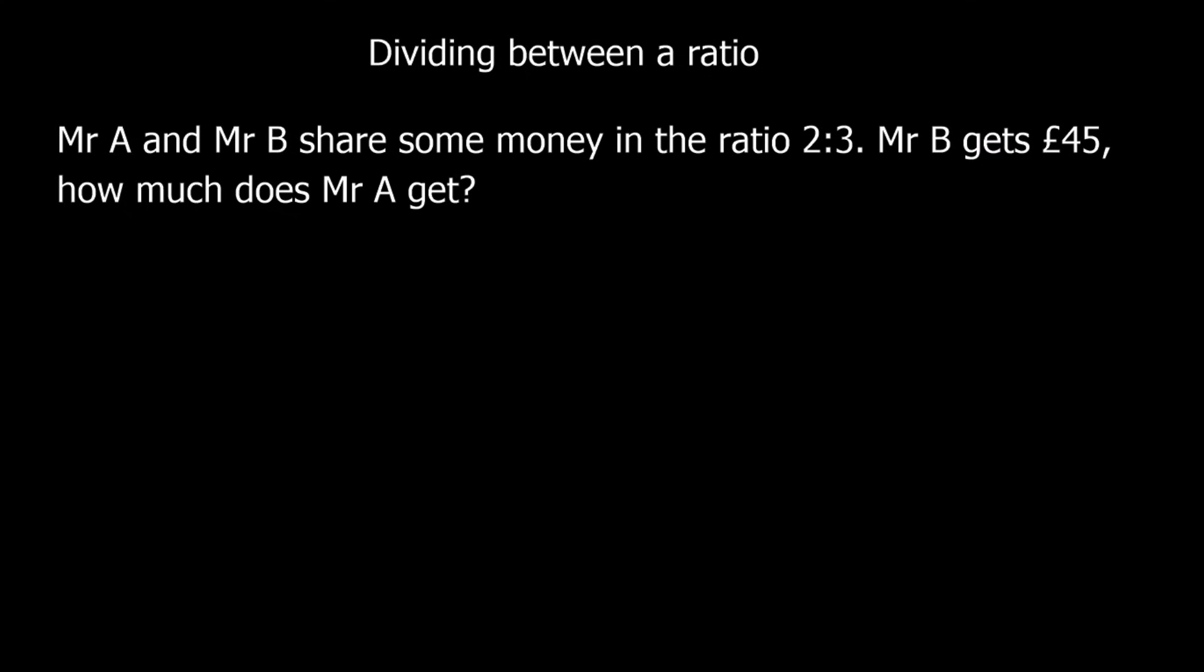Okay, this is a different kind of question. You need to be aware that the ratio questions aren't always going to come in exactly the same format. So Mr. A and Mr. B share some money in the ratio 2 to 3. Mr. B gets 45 pounds. So this is what Mr. B's got. This is what Mr. A's got. So 45 pounds isn't going to go between 5 parts. It's just those 3 parts.